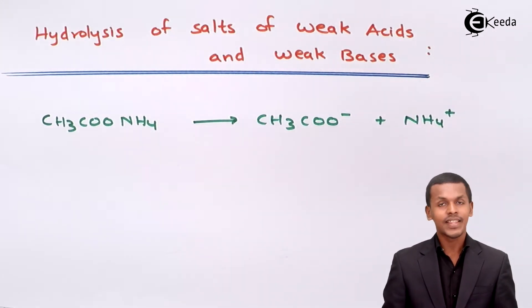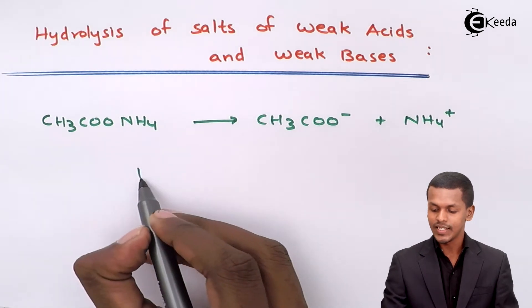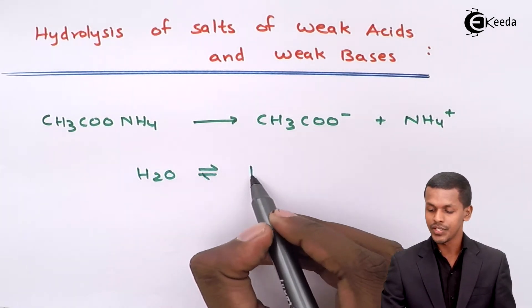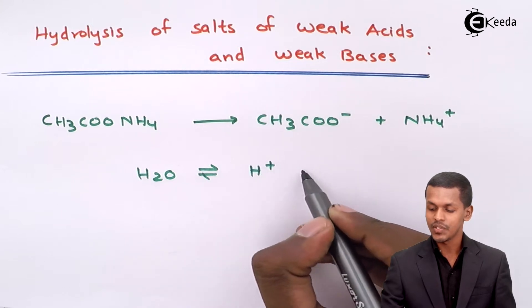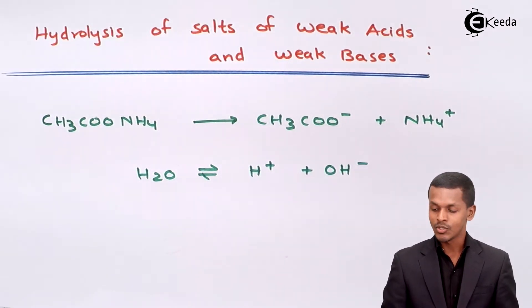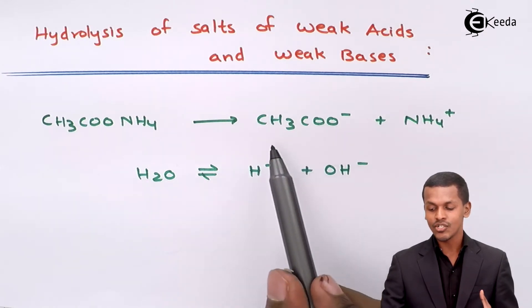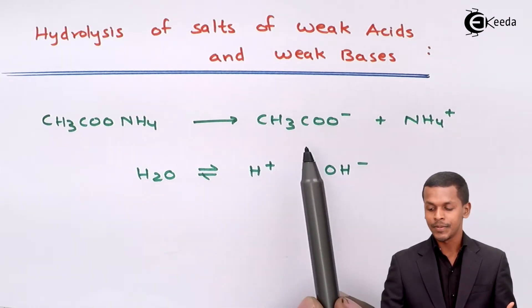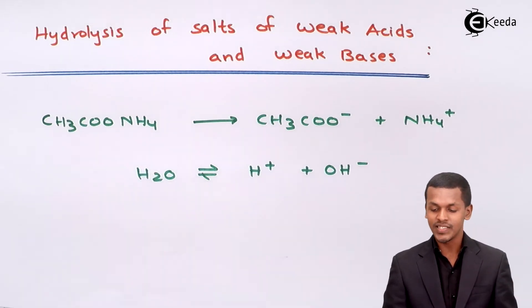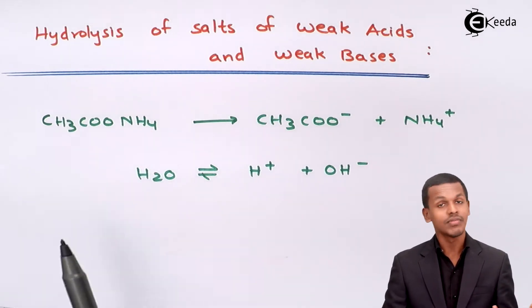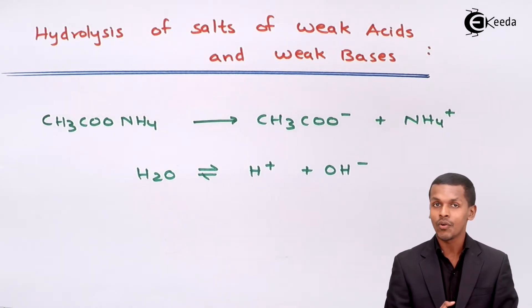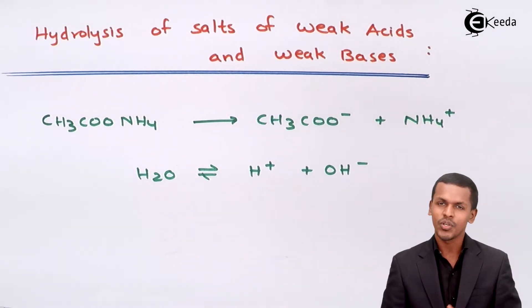Now if it reacts with water — and water, as we know, is a weak electrolyte — it will dissociate into H⁺ and OH⁻ but there will be formation of an equilibrium. We are letting the reaction happen with CH₃COONH₄, that is ammonium acetate, and water, to see the effect on the concentration of H⁺ and OH⁻.